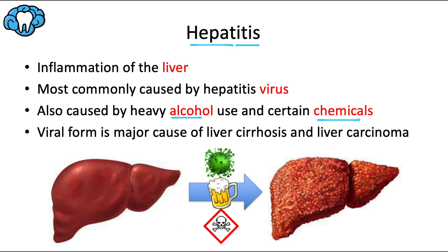Examples of hepatotoxic chemicals include phosphorus, carbon tetrachloride, acetaminophen in large and chronic doses, and chloroform. There's also autoimmune hepatitis, where the body's immune system attacks its own liver. The exact cause is not known, although it probably has to do with genetics and some environmental factors.